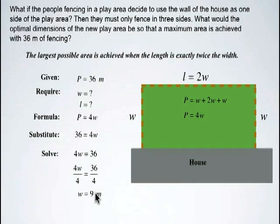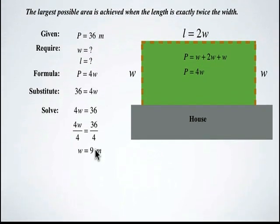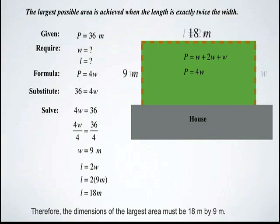Now we need to figure out the length. Remember that the length is just twice the value of the width. When we plug in our width of 9 meters and multiply by 2, we get a length of 18 meters.